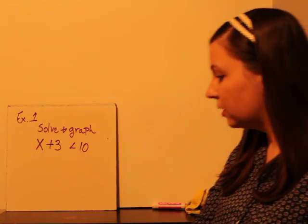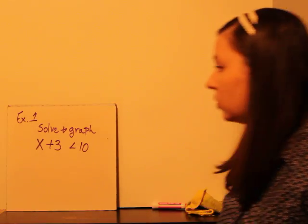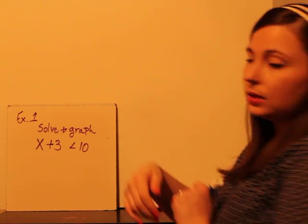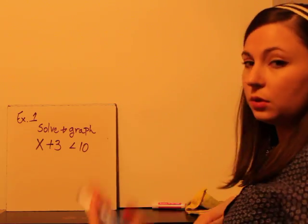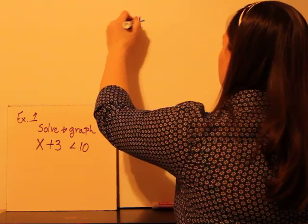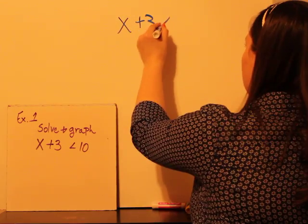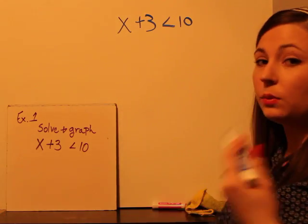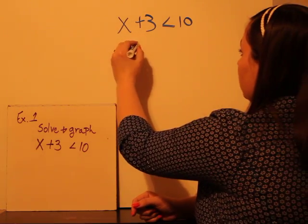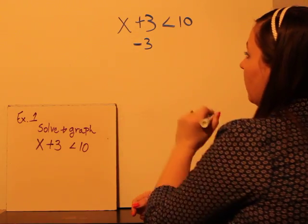So here's our first example. We're going to solve and graph x plus 3 is less than 10. We'll start with the solving. So x plus 3 is less than 10. How do we get rid of adding 3? With subtracting 3. So we're going to do that on both sides.